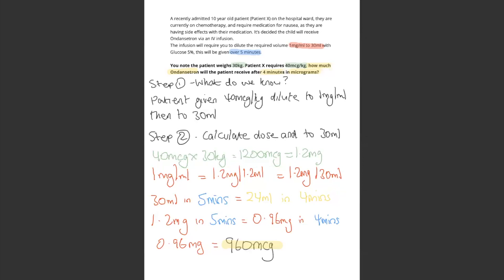We know that it's been diluted to 30 ml of glucose, and the infusion will be given over 5 minutes. So if it's 30 ml over 5 minutes, then it's 24 ml in 4 minutes. So if it's 1.2 mg in 5 minutes, it's 0.96 mg in 4 minutes. 0.96 mg times 1,000 gives you 960 micrograms.